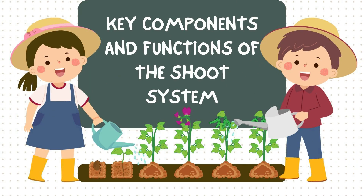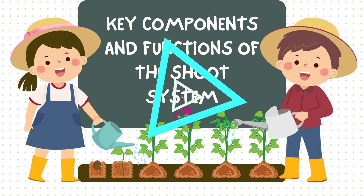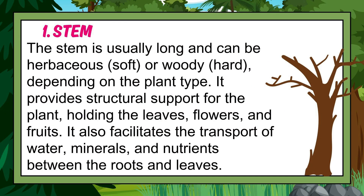The key components and functions of the shoot system. The stem is usually long and can be herbaceous or woody, depending on the plant type. It provides structural support for the plant, holding the leaves, flowers, and fruits. It also facilitates the transport of water, minerals, and nutrients between the roots and leaves.